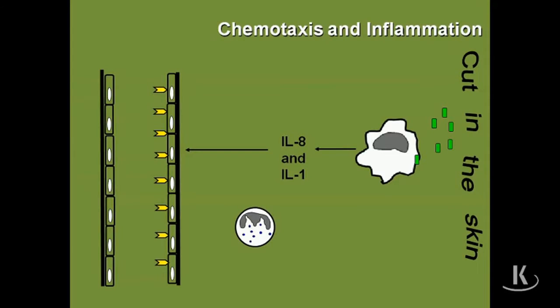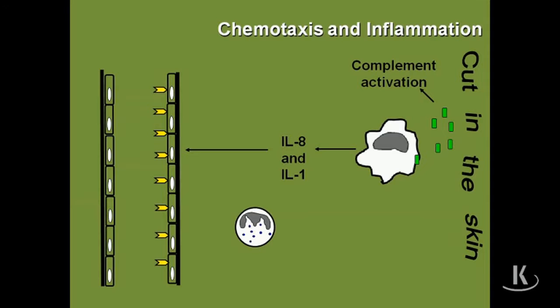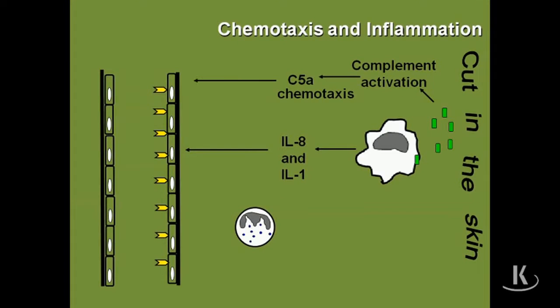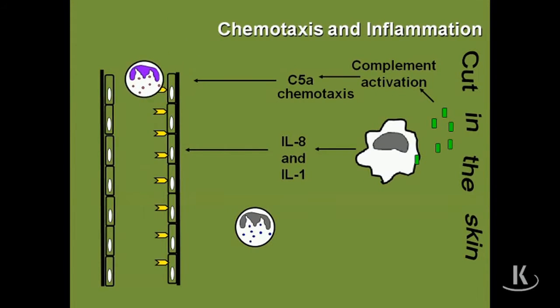Additionally, you're going to get some complement activation. We mentioned another molecule in the complement cascade important for chemotaxis — C5A. C5A is going to also help recruit cells from the blood into the tissue, drawing cells that are passing through and getting them into the tissue to help clean up the bacteria and eventually help repair any tissue damage.